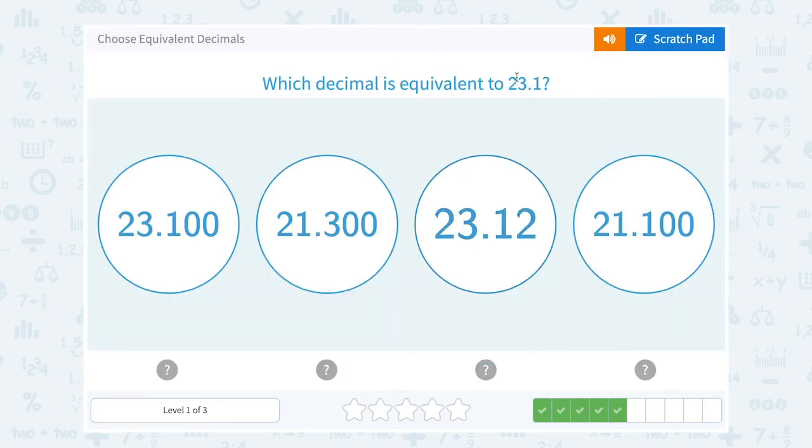Which decimal is equivalent to 23.1? Well that would have to be 23.100. Those zeros on the end don't change our value.